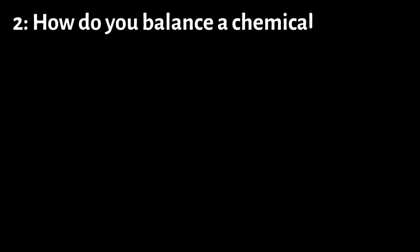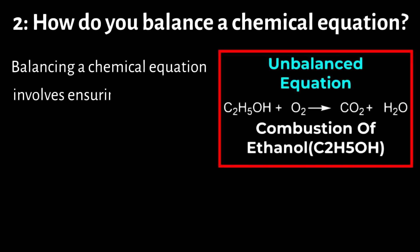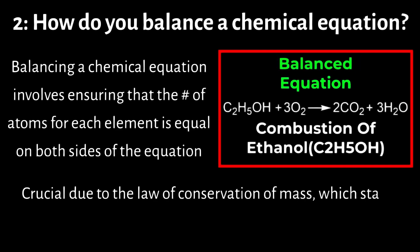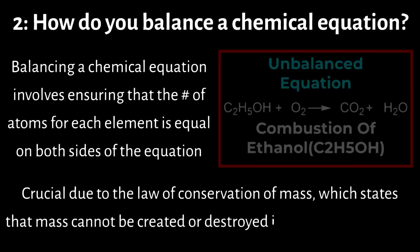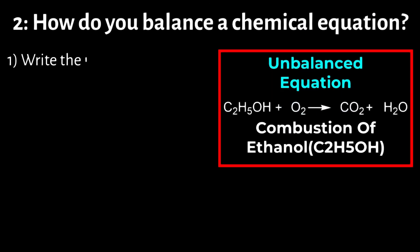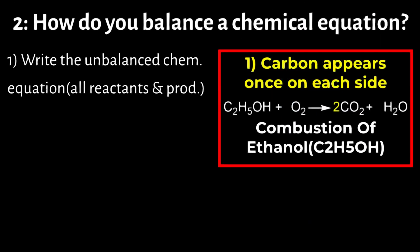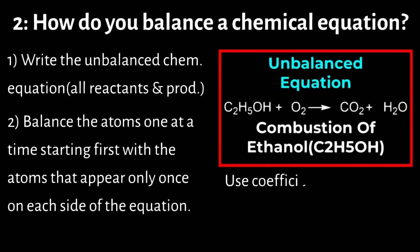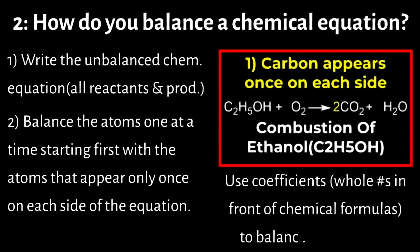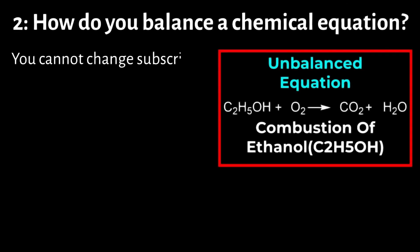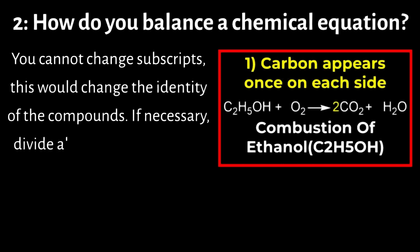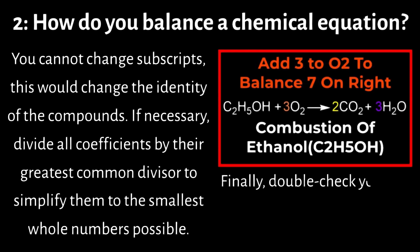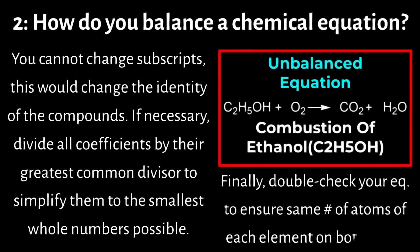Number 2: How do you balance a chemical equation? Balancing a chemical equation involves ensuring the number of atoms for each element is equal on both sides of the equation. This is crucial due to the law of conservation of mass, which states that mass cannot be created or destroyed in a chemical reaction. First, write the unbalanced chemical equation including all reactants and products. Next, balance the atoms one at a time, starting with the atoms that appear only once on each side. Use coefficients — whole numbers placed in front of the chemical formulas — to balance the equation. You cannot change subscripts, as this would change the identity of the compounds. Finally, double-check your balanced equation to ensure that the number of atoms of each element is the same on both sides.